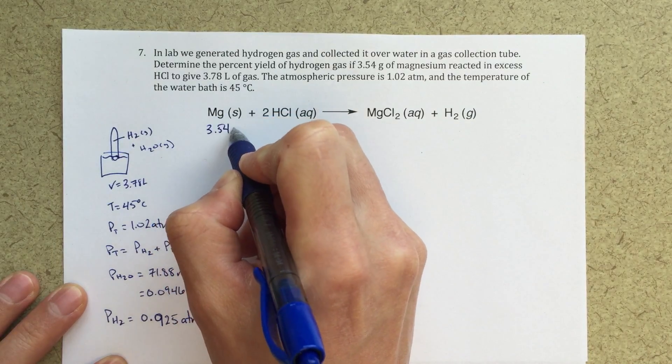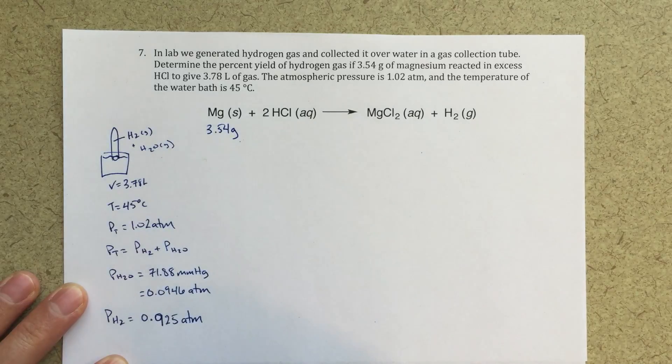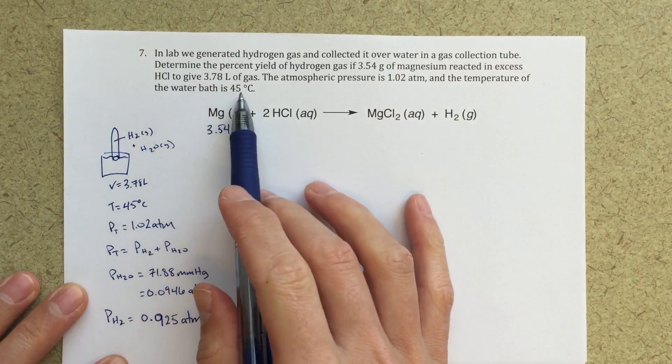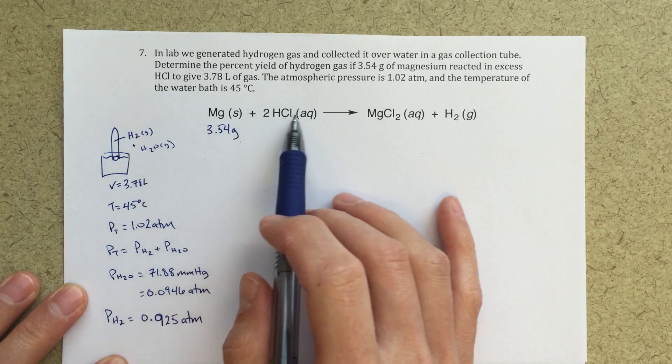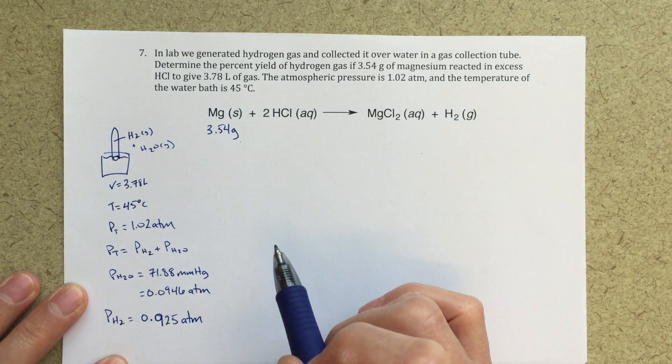So let's come back to that and let's go back to this other part of this question. So 3.54 grams of magnesium, and I'm going to react that in excess HCl. So excess HCl, so this is clearly the magnesium is going to be the limiting reagent.